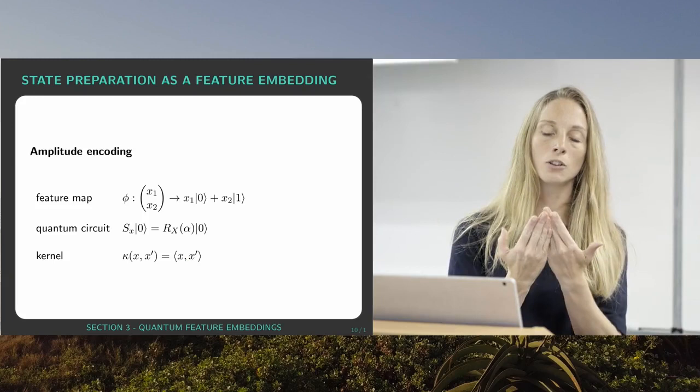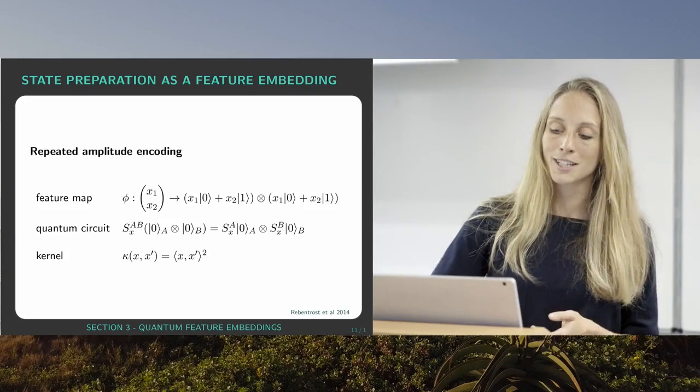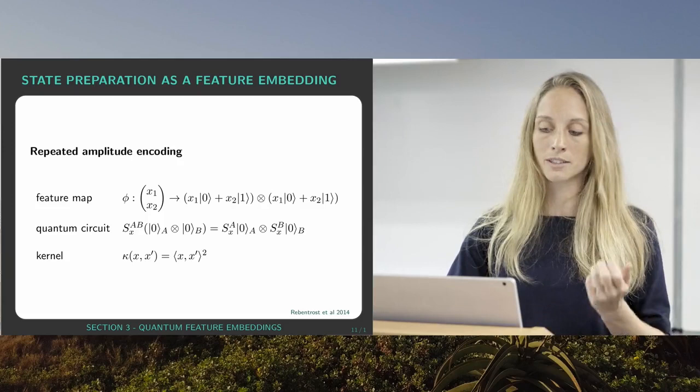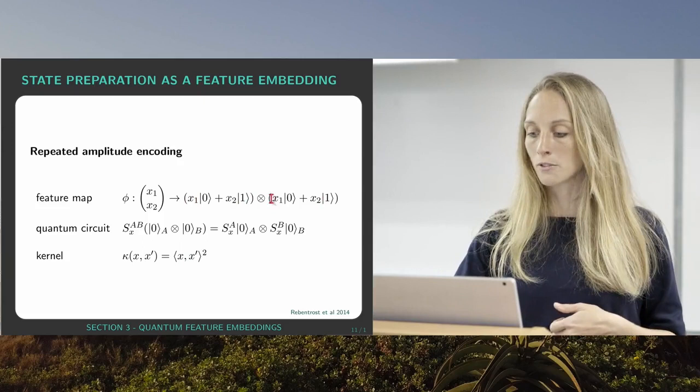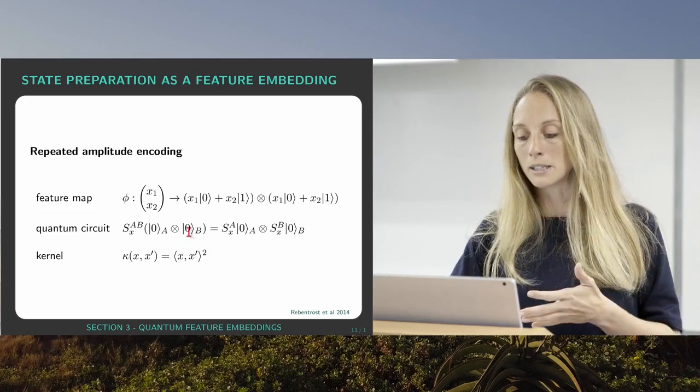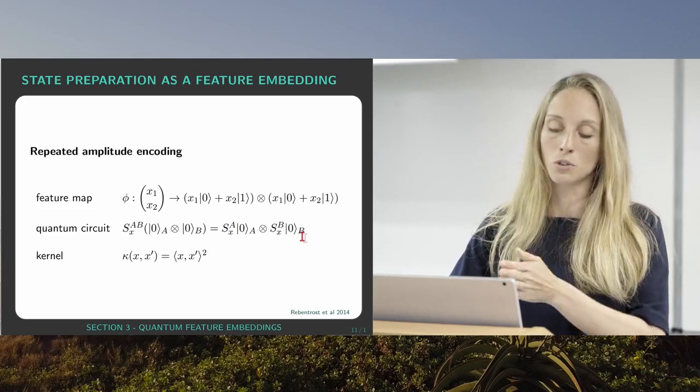Another nice trick is just to do the same thing, exactly the same thing, but now repeat the amplitude encoding scheme. So basically I encode x1 and x2 in the first qubit and I do exactly the same thing for the second qubit. So my state preparation scheme on both these subsystems A and B is basically just do it once on system A and then do it once on qubit B.